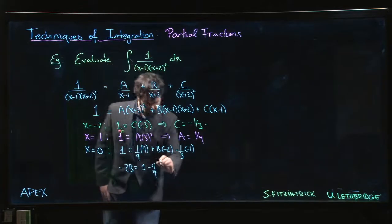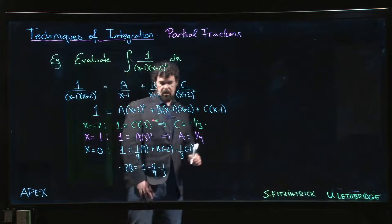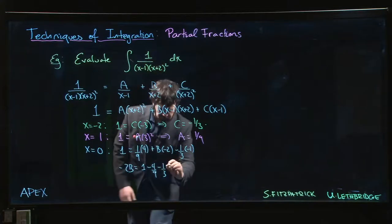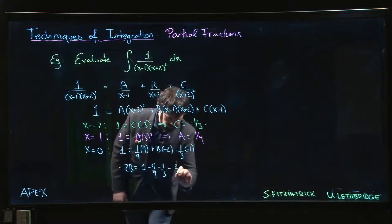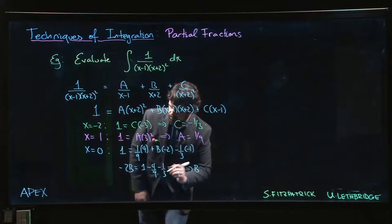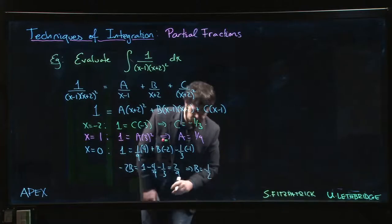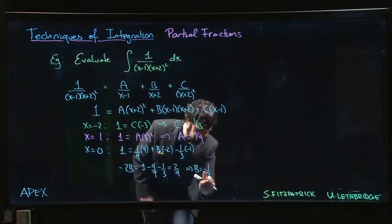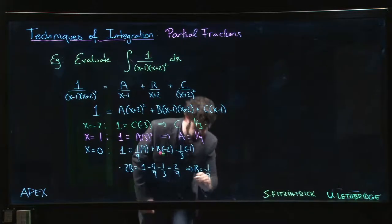Minus 4 over 9 minus 1 over 3. So 1 third is 3 ninths, so that's 1 minus 7 ninths, so that leaves me with 2 ninths. And that suggests that B should be minus 1 over 9. Right, 2 ninths divided by 2 leaves me with 1/9.